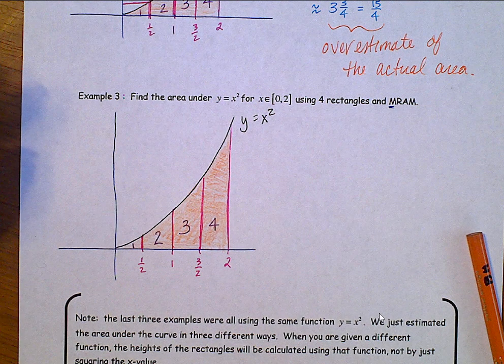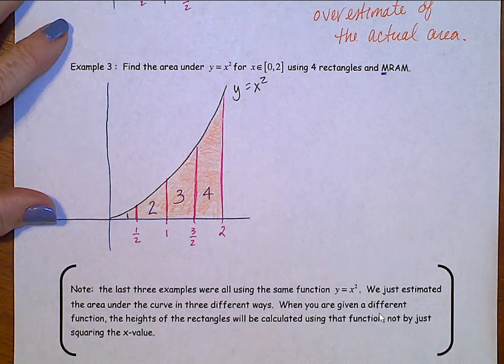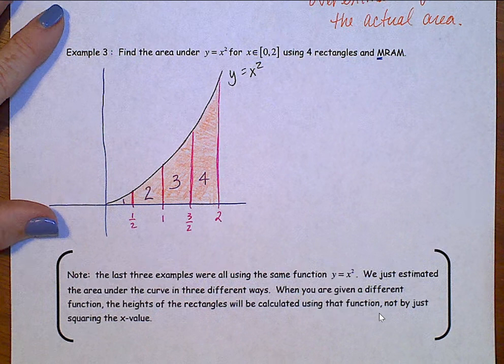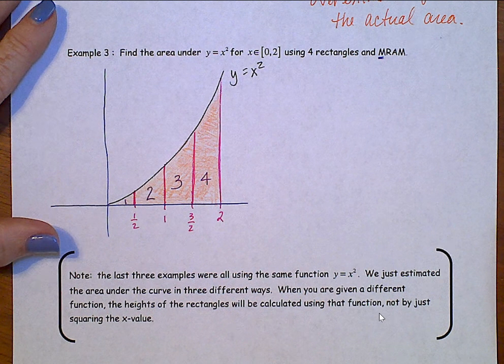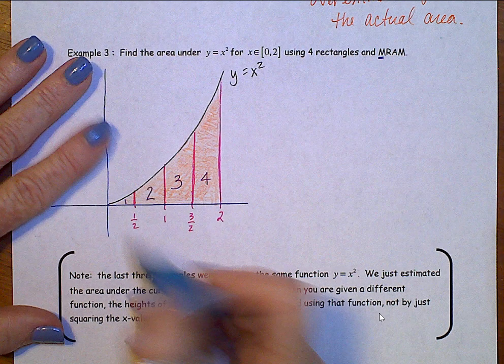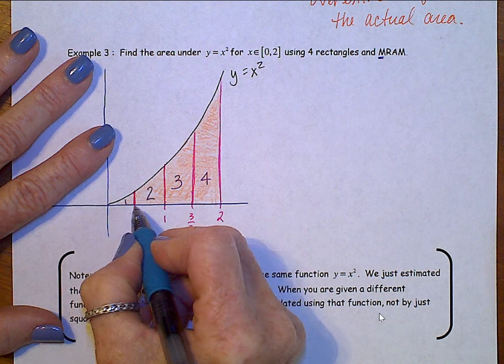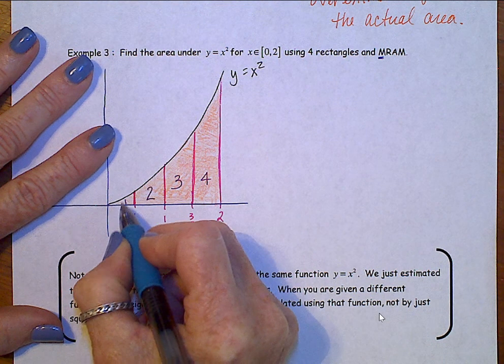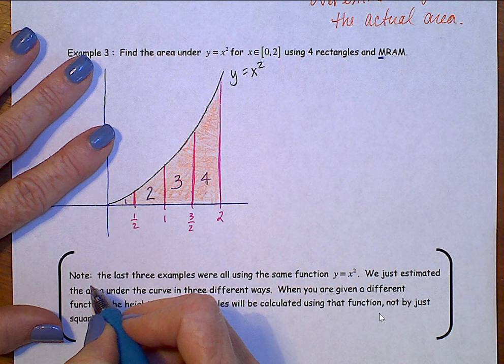Alright, now, LRAM used left-hand heights, RRAM used right-hand heights, MRAM uses midpoint heights. So, what we need to do is we need to find the midpoint of each section, and then take that up to where it hits the function, and that will be the height.